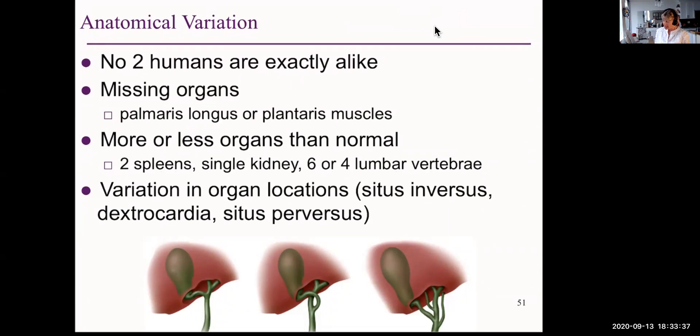Some are missing organs. The palmaris longus, for example, the plantaris muscles. Those are arm and leg muscles, respectively, that would have been useful perhaps in our evolutionary past, but as we don't use them anymore, some people just simply don't have them. We may have more or less organs than normal. Some people have two spleens, a single kidney, perhaps six or four lumbar vertebrae, and there's variations in organ locations.